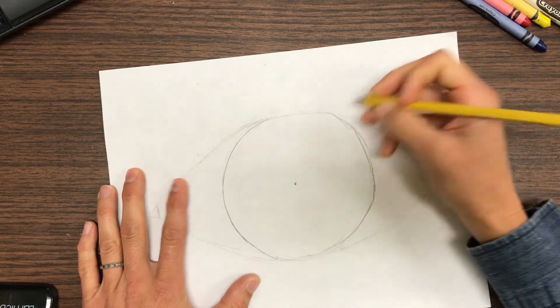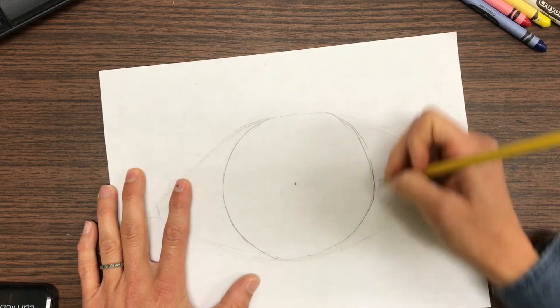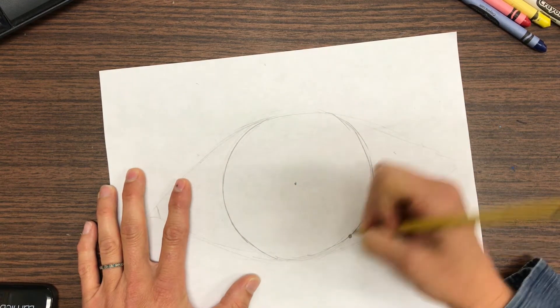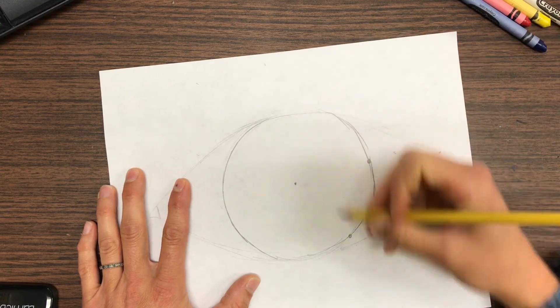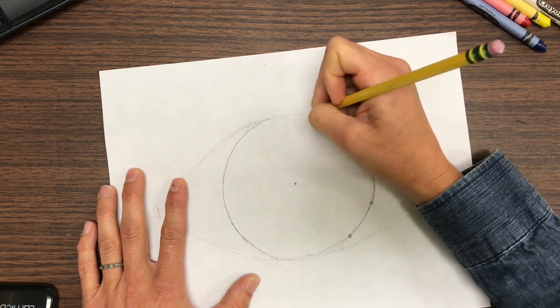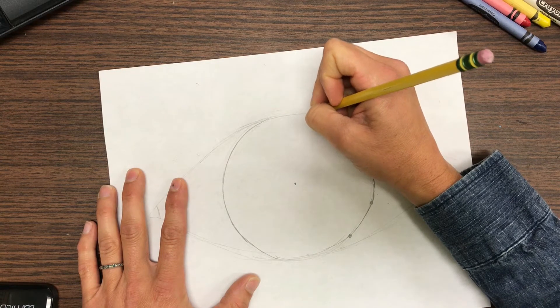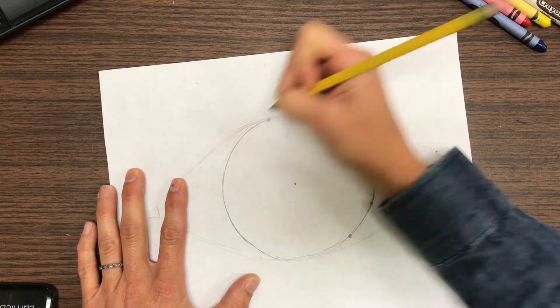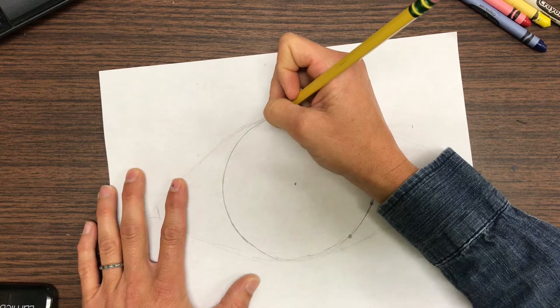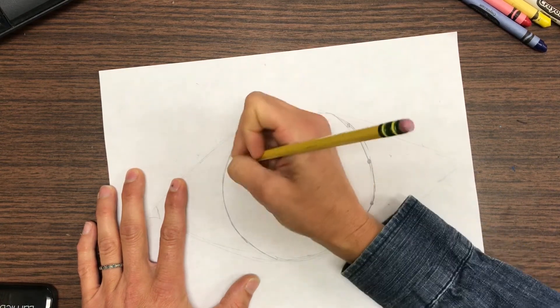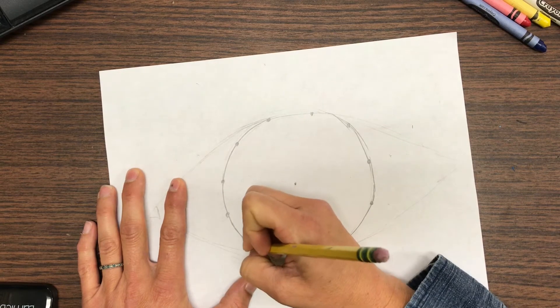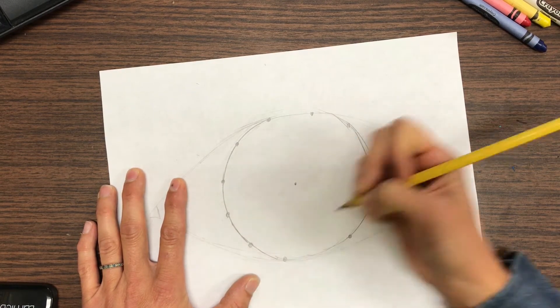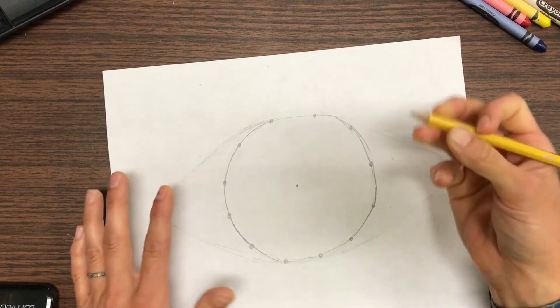You're going to put 12 dots around the outside of that circle. I'm going to do it. It doesn't matter where you start, just try to space them evenly. If they're not perfect that's okay. One, two, three, four, five, six. So I should be about halfway around, which I am. Seven, eight, nine, ten, eleven, twelve. That looks pretty close.